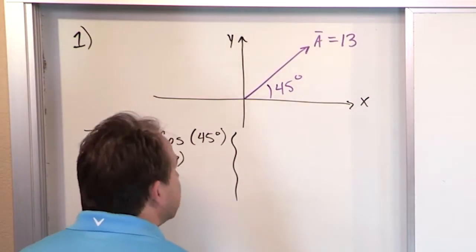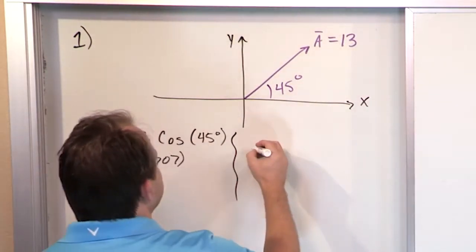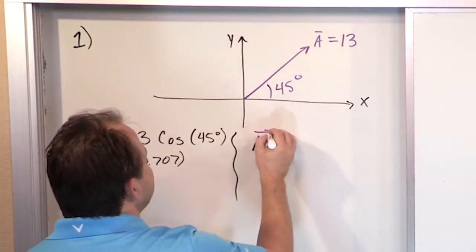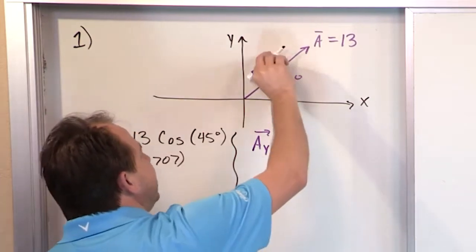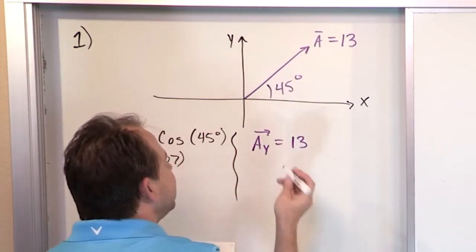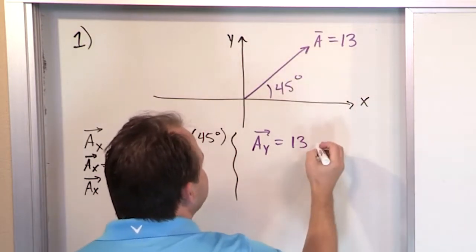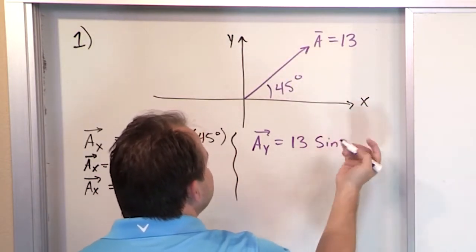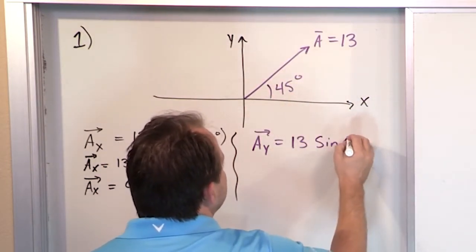And then we're going to go over here. Let's switch colors and find the y component, A sub y vector. What is it going to be? It's going to be the length of the vector itself, the hypotenuse 13, and we're chopping it to find the y component, so that's going to be a sine, the opposite of this angle, sine of 45 degrees.